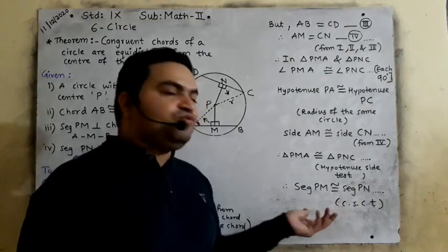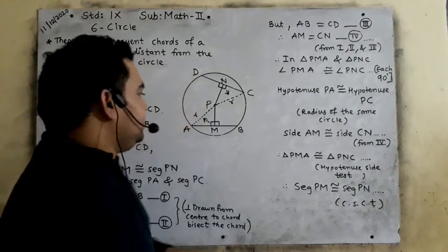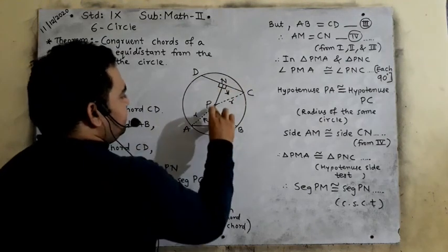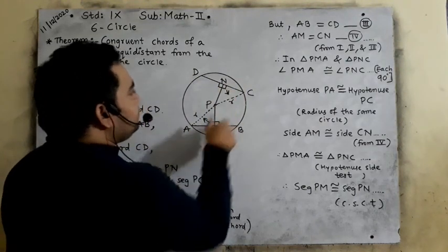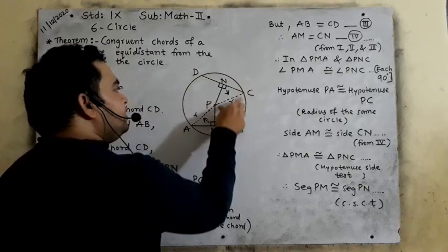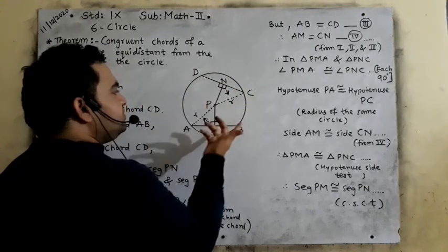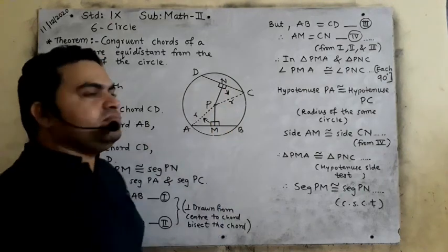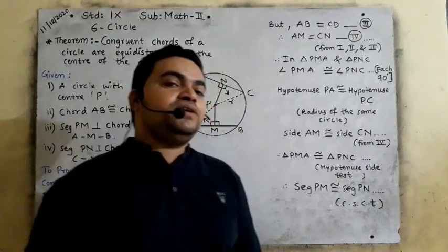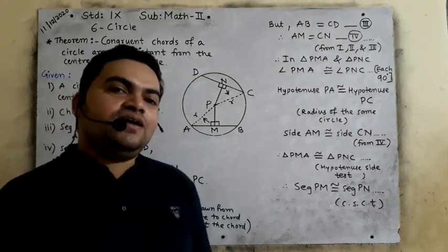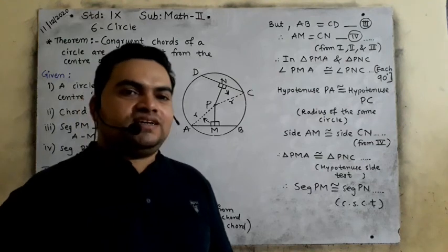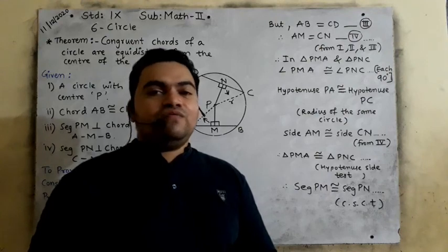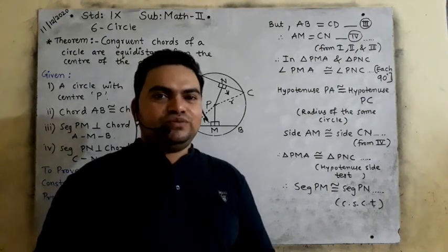I hope you understood this theorem. We have shown that chord AB congruent to chord CD, PM and PN are perpendiculars, and PA equals PC as radii, so PM is congruent to PN. Please practice this. Now we will start practice set 6.2.